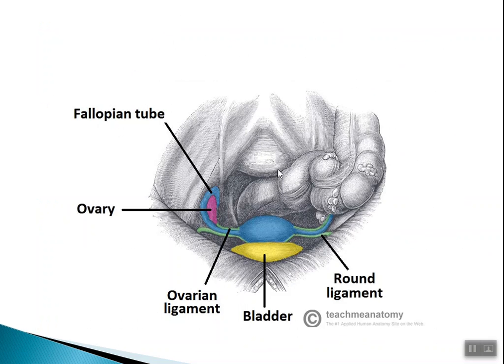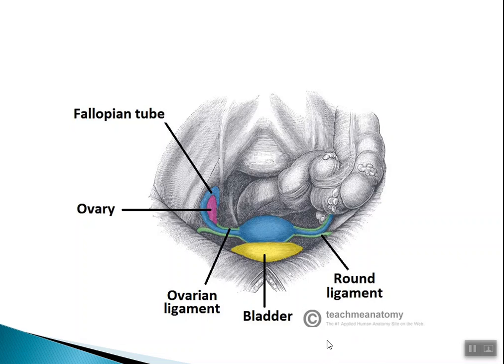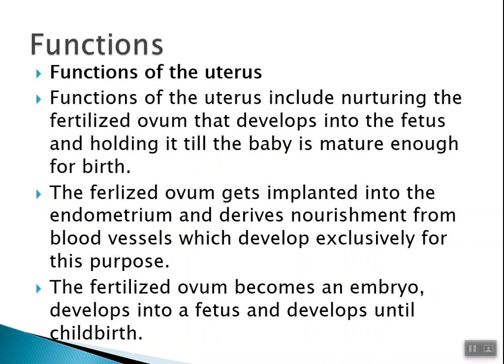In the diagram you can see all the ligament structures — the round ligaments and other supporting structures — that hold the uterus in position. Regarding blood supply: the uterus receives arterial supply via the uterine arteries, venous drainage is via plexuses in the broad ligaments draining into the uterine veins, and lymphatic drainage is via the iliac, sacral, aortic, and inguinal lymph nodes.